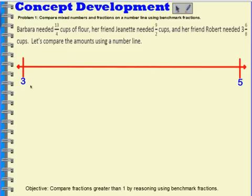Our number line starts with a 3 and ends with a 5. When I think about what's about halfway between 3 and 5, I know that's going to be a 4. So I'm going to label that, put my 4 in. We're going to take each one of the amounts of cups of flour and figure out where they would fall on our number line.